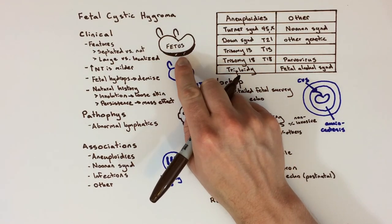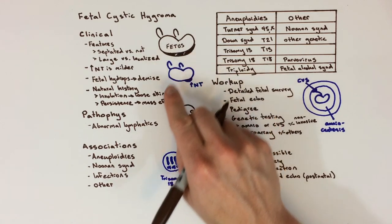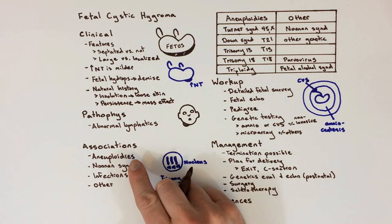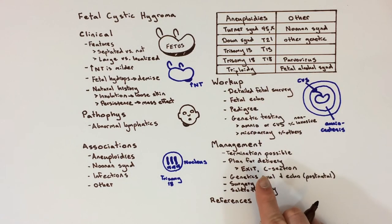To summarize, fetal cystic hygromas are fluid-filled swellings affecting a fetus that may be isolated or occur in conjunction with other congenital anomalies. They can be caused by genetic defects, or by in utero infections, or can happen for an unknown reason. When a fetal cystic hygroma is found on prenatal ultrasound, the most important step is follow-up with a specialist trained in the counseling and management of this finding.